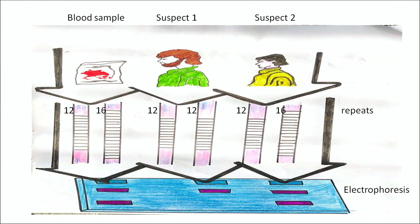This example shows how we can ascertain who is a suspect at a crime scene. A blood sample is collected from the crime scene, and we have suspect 1 and suspect 2. We run the DNA extracted from the crime scene blood sample on gel electrophoresis — two red bands are formed. When we run DNA from suspect 1, only one band appears. When we run DNA from suspect 2, the bands clearly match the crime scene sample. Therefore, suspect number 2 is the person who committed the crime.